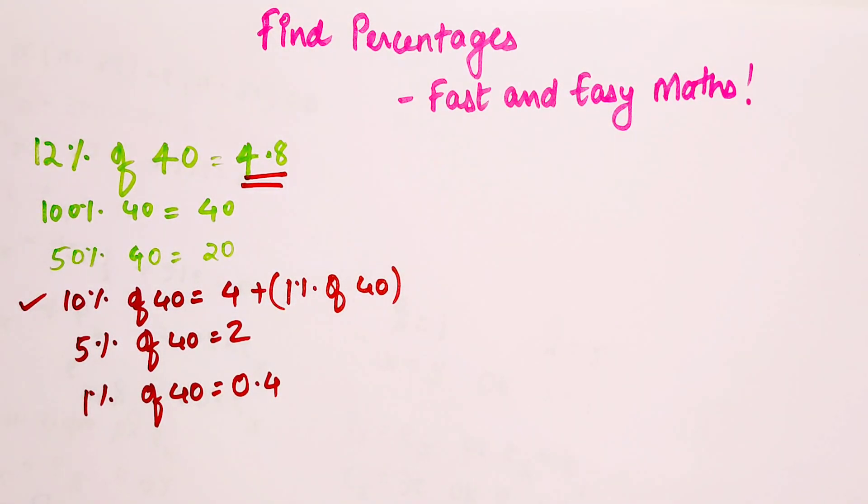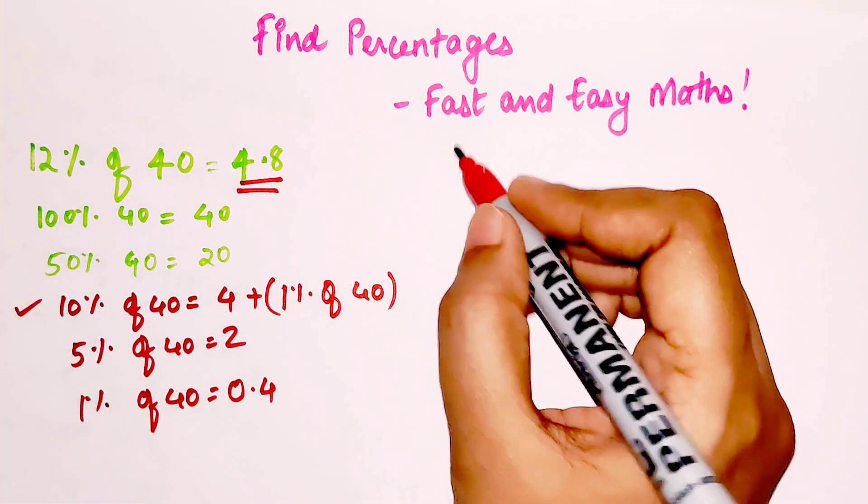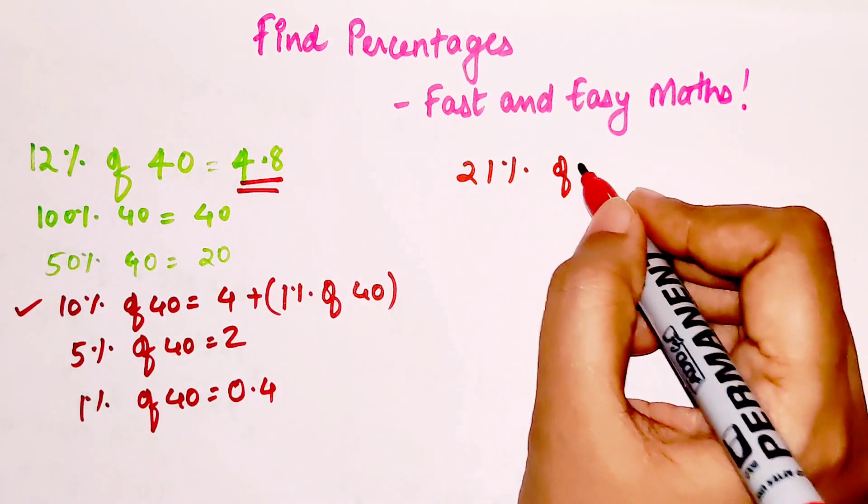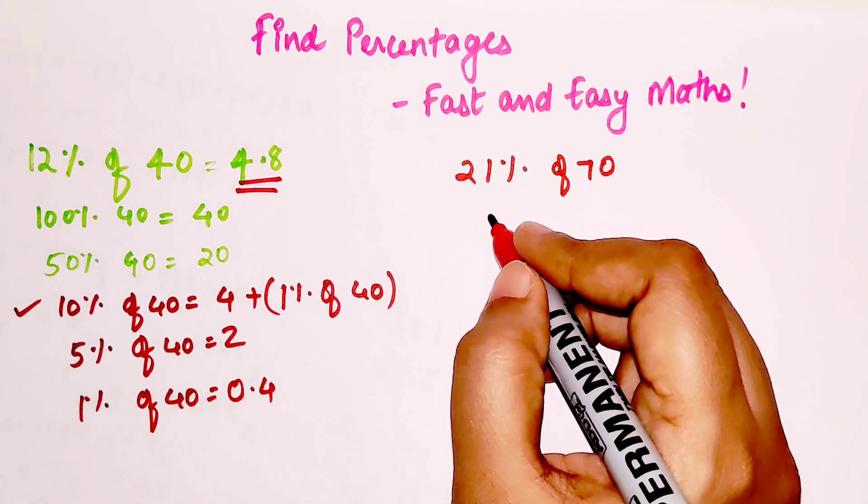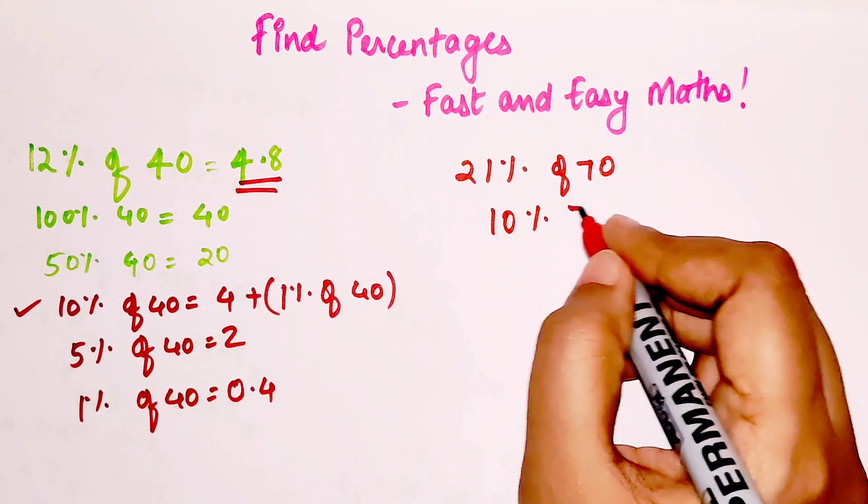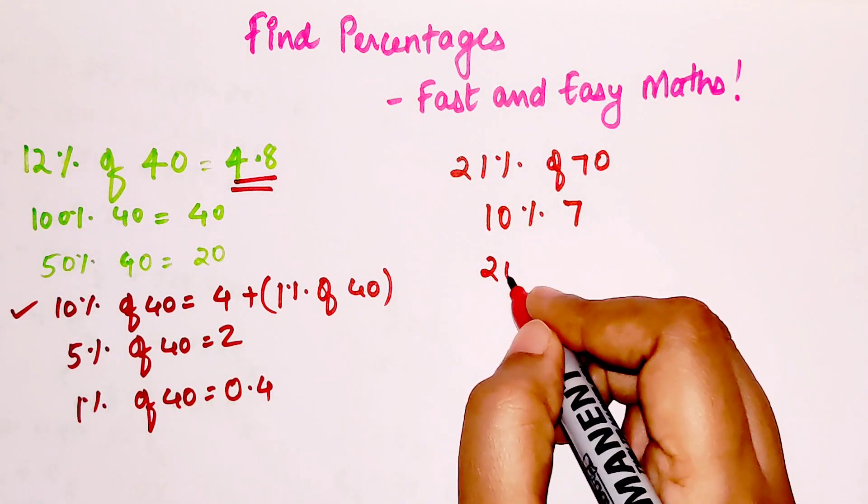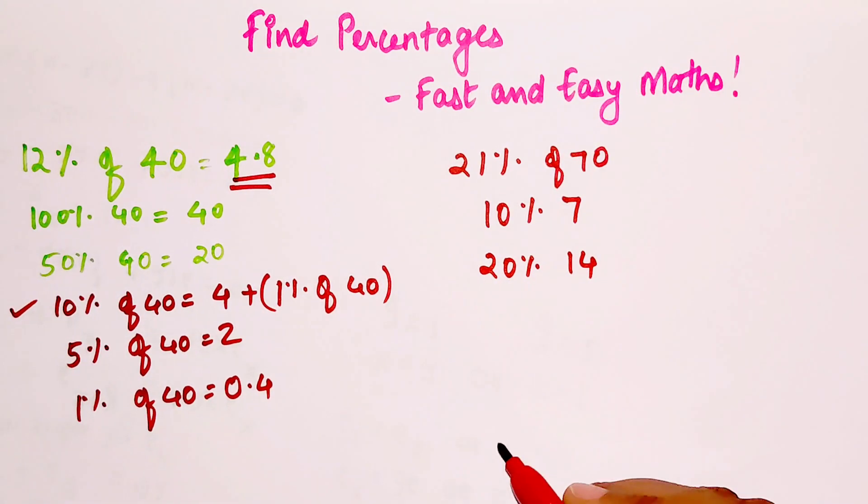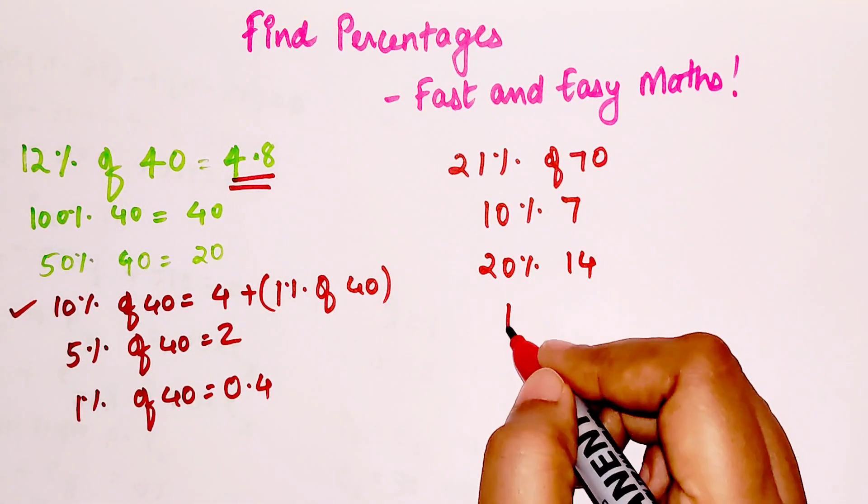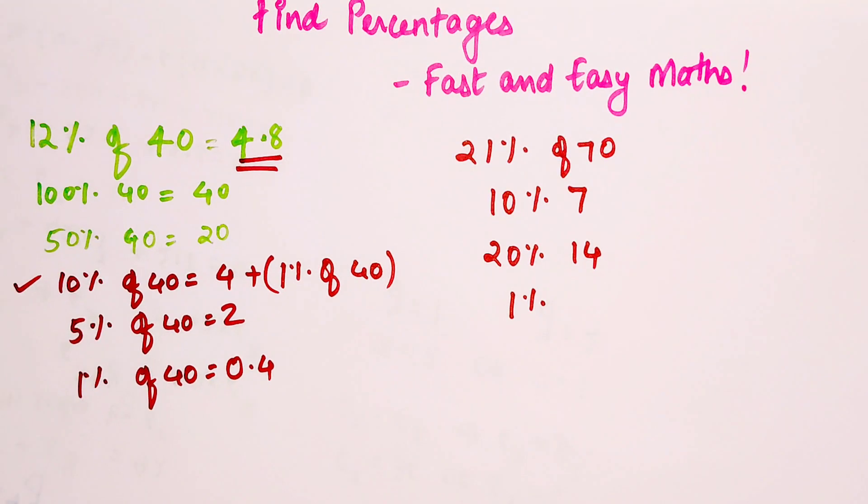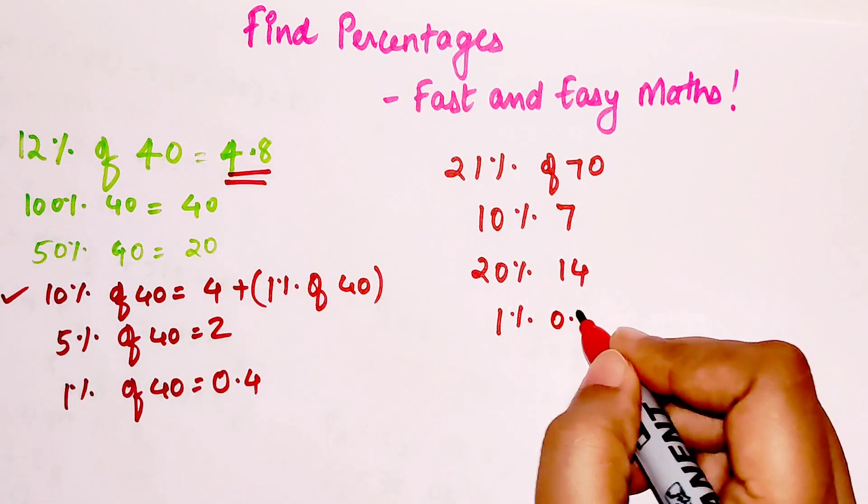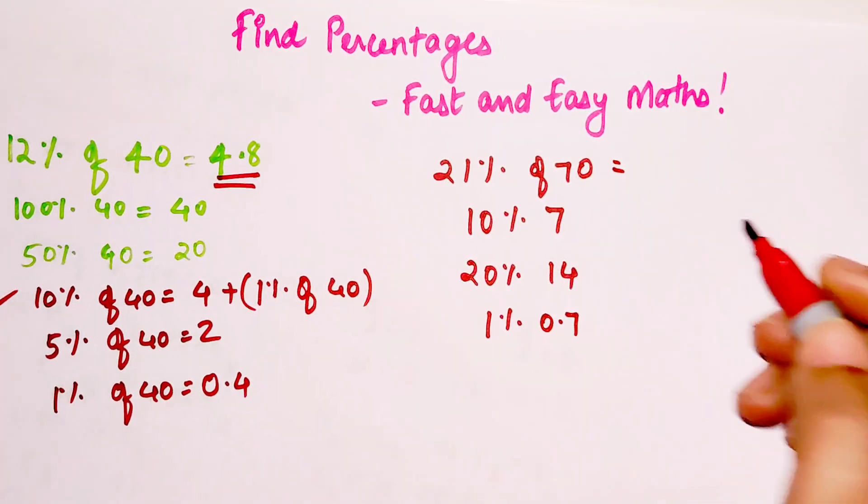Now let's very quickly try 21% of 70. So now we know that 10% will be 7, so 20% will be 14, right, double of this will be double of this, correct.